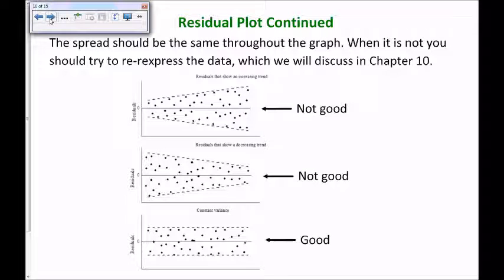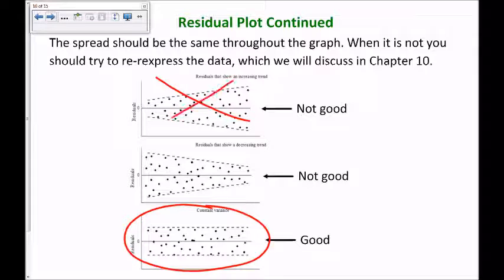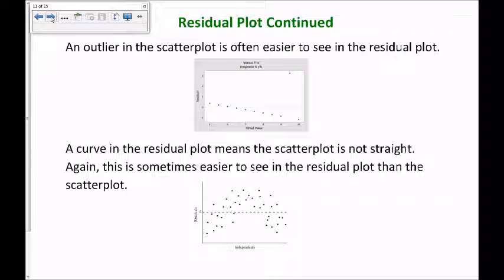Here are some examples of things you do not want to see. The spread should be the same throughout the data — you don't want it to be spreading out on one side or the other. If it does, you will try to re-express the data, which we'll discuss more in Chapter 10. An outlier in the scatterplot is often easier to see in the residual plot — a point that's way up by itself is an indicator of an outlier in the actual scatterplot. Also, a distinct pattern of a curve in your residual plot is an indicator that there's a curve in the actual scatterplot.